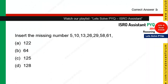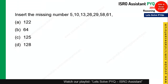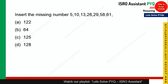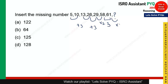This question asks for the next number in the series: 5, 10, 13, 26, 29, 58, 61. The pattern alternates between adding 3 and multiplying by 2: 5×2=10, 10+3=13, 13×2=26, 26+3=29, 29×2=58, 58+3=61, so 61×2=122. Option A — 122 — is the correct answer.